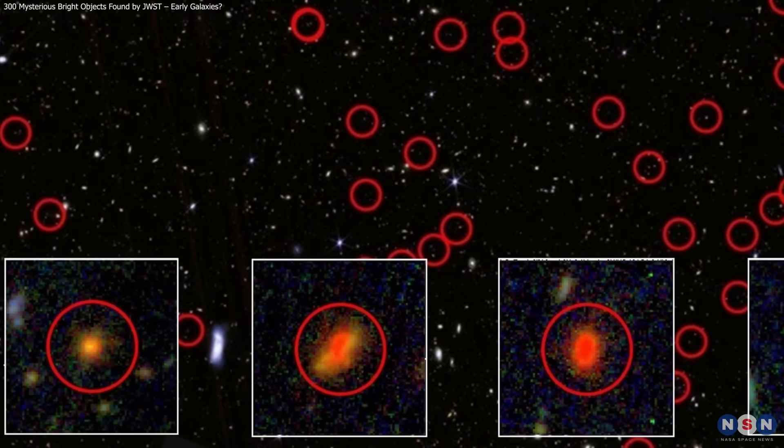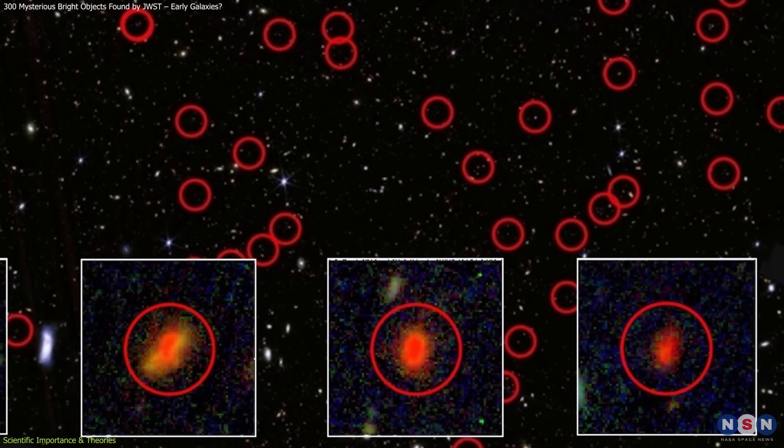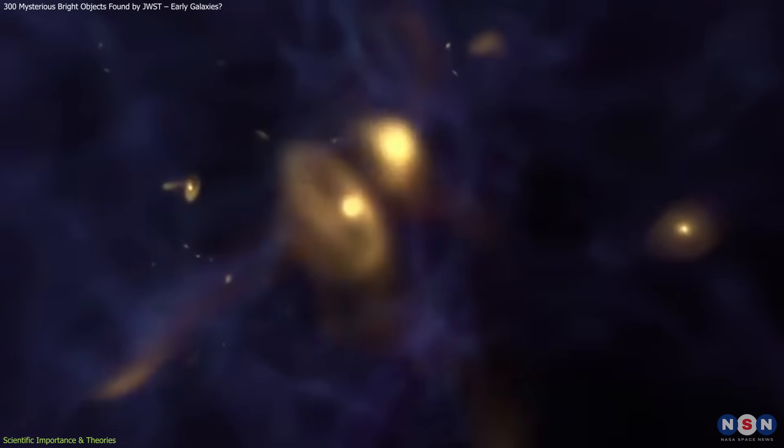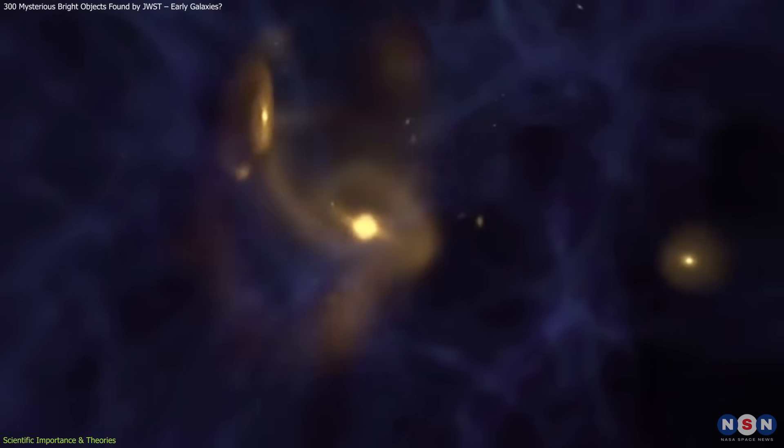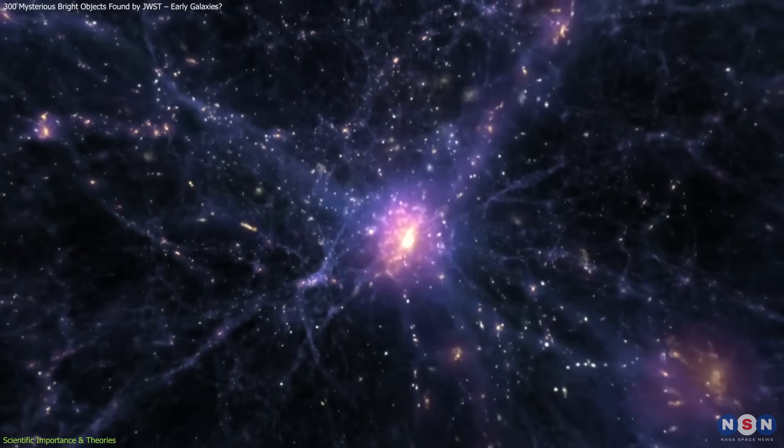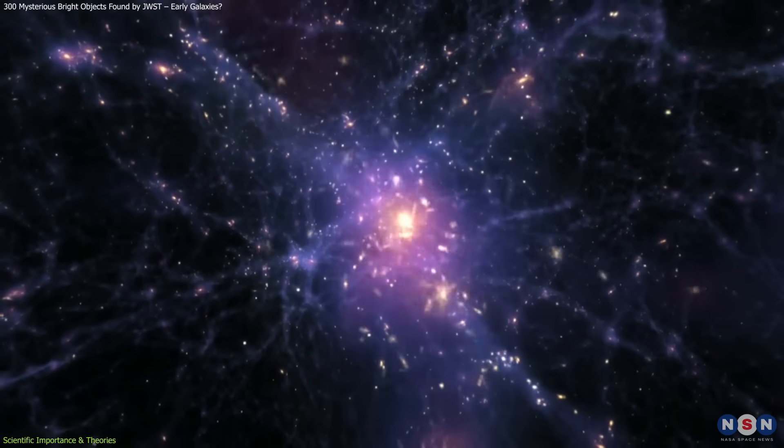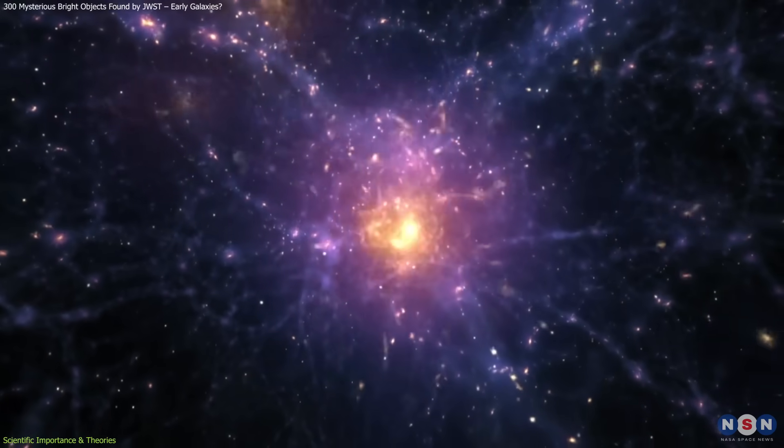The standout feature of these candidates is their unexpected brightness. According to current galaxy formation models, early galaxies should generally be smaller and fainter, gradually building mass over time through mergers and sustained star formation.